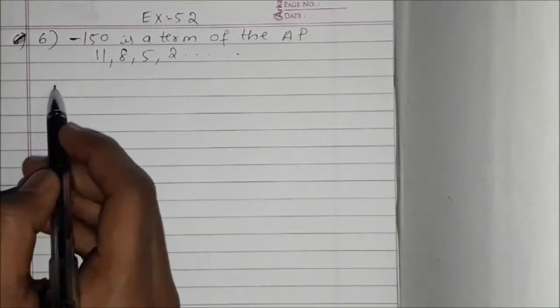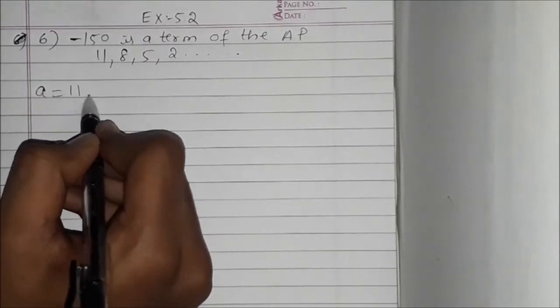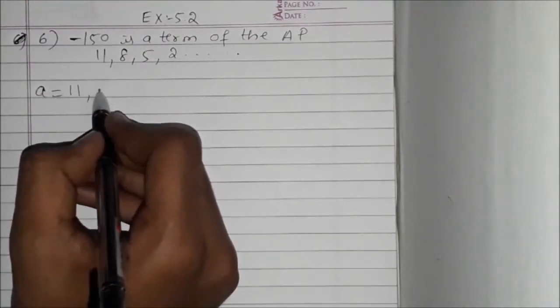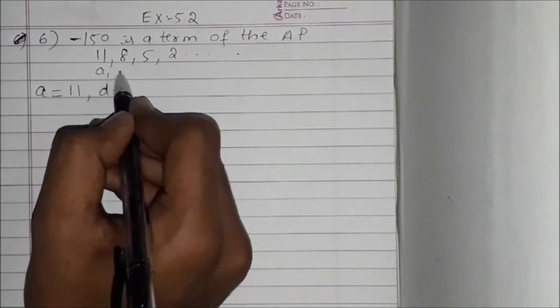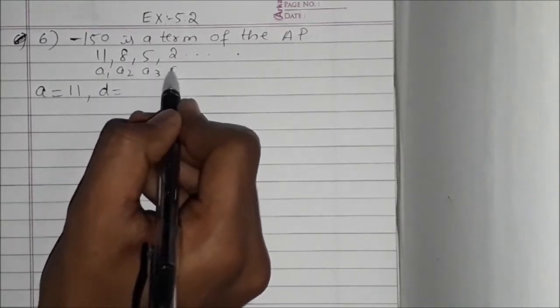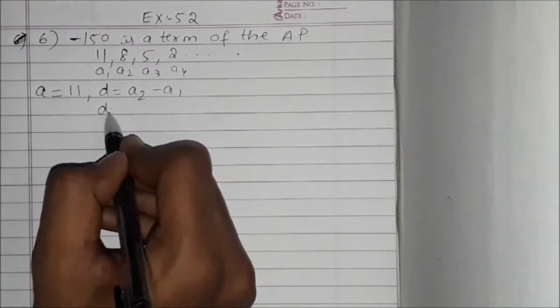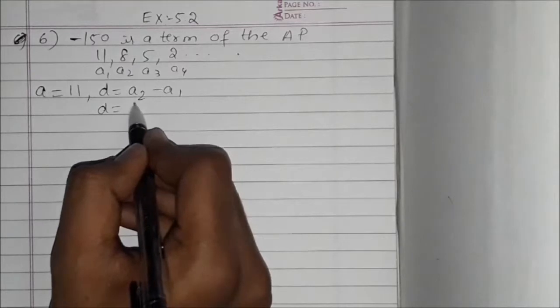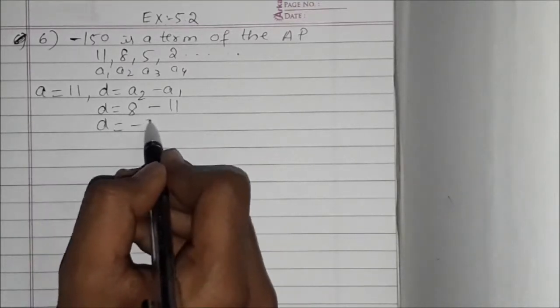Now let's find N first. Here A is equal to 11. D is equal to A2 minus A1. D is equal to 8 minus 11, which is minus 3.